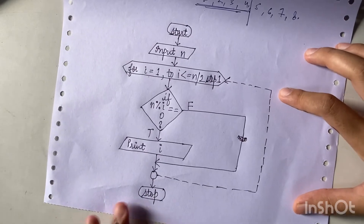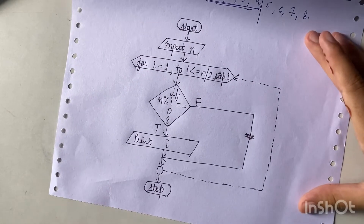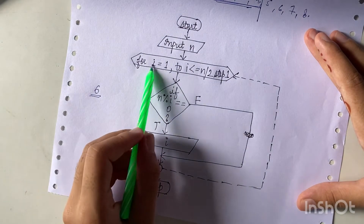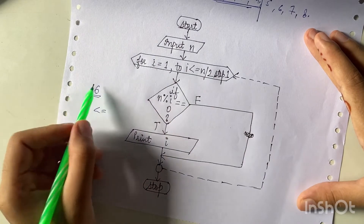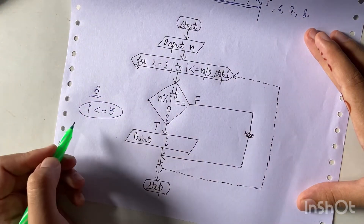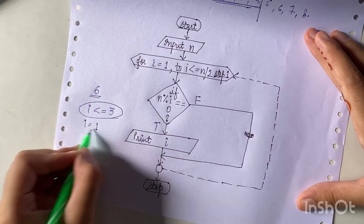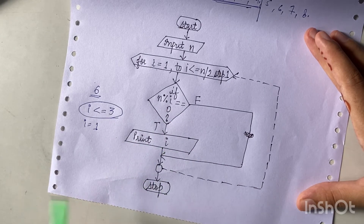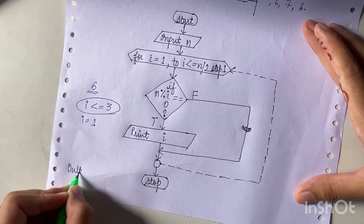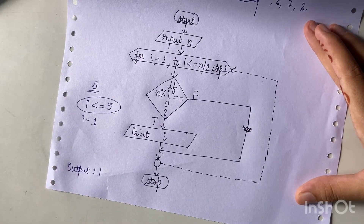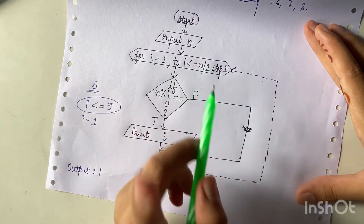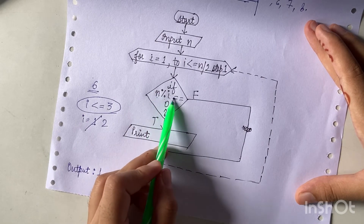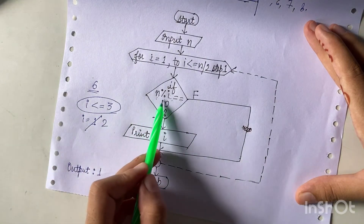Now let us do a simple dry run. We have n equals 6, and the condition is i <= n/2, so i <= 3. When i equals 1: n mod 1 equals 0, condition is true, so we print 1. After incrementing, i equals 2: 6 mod 2 equals 0, condition is true, so we print 2.